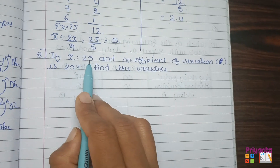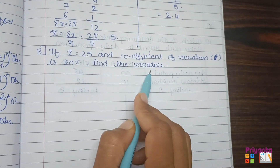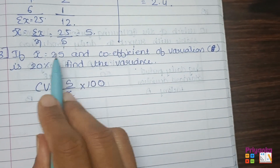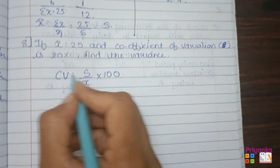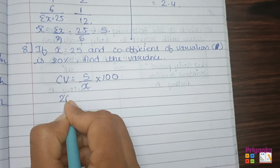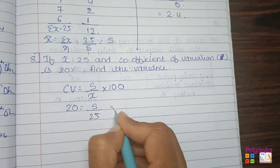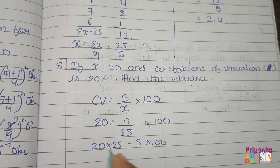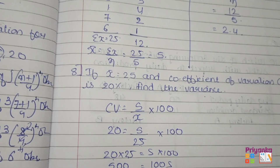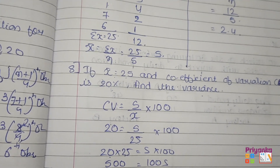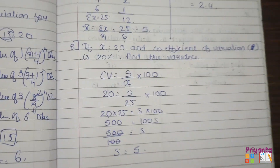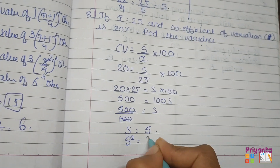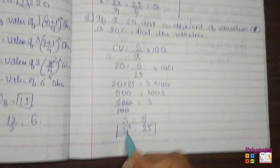Question 8: mean x̄ = 25 and coefficient of variation = 20%. Find the variance. Using the formula: CV = (s / mean) × 100. So 20 = (s / 25) × 100, giving 20 × 25 = 100s, so 500 = 100s, meaning standard deviation s = 5. Therefore variance = s² = 5² = 25.